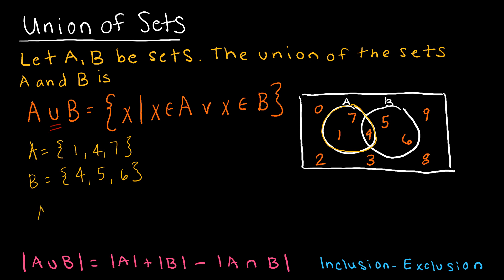And so A union B would be 1, 4, and notice 4 is listed twice, but I'm only going to list it once, 5, 6, and 7. So using my picture, it's essentially everything here in either circle, including this part in the middle that's contained in both.